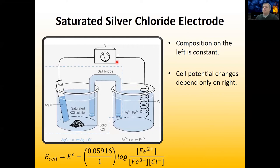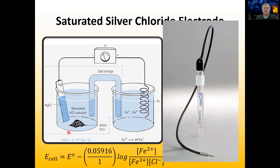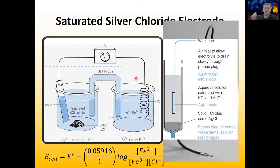Now it's not always very convenient to set up a big experiment like this, especially if you're just trying to quickly measure the potential of a solution or something like that. So instead of always setting up this beaker with the salt bridge and the bar and everything, we actually condense everything in this dashed line to a simple probe. It's just got your wire coming in here — let's actually look at a schematic view of what's going on here.